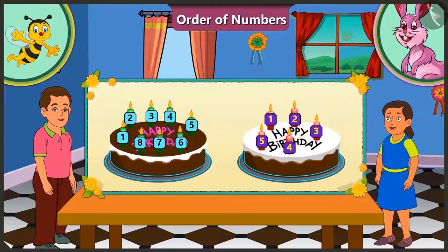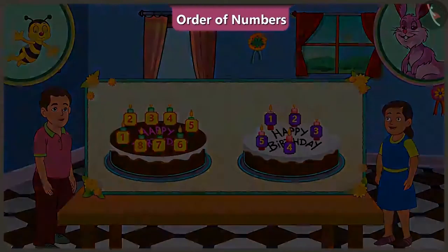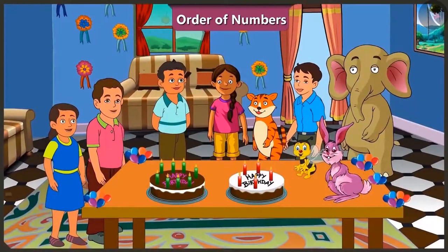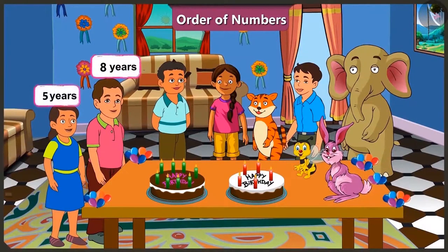Bunty has a total of 8 candles on his cake. This shows that Bunty is 8 years old and Bubbly is 5 years old.